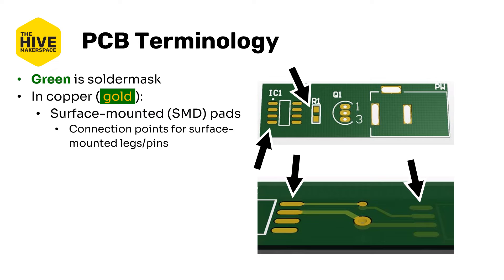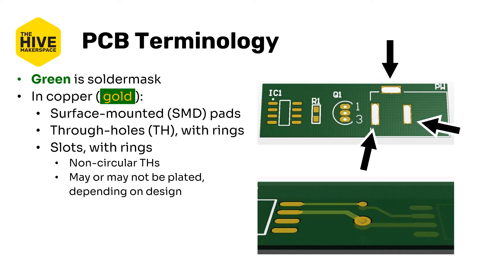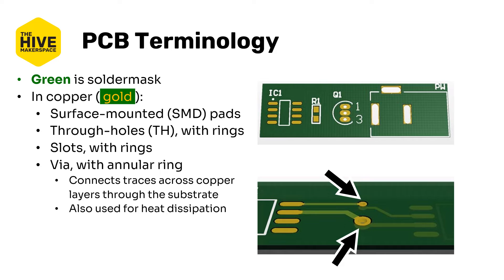Areas of exposed copper metal include surface mounted pads where surface mounted devices connect to, annular rings around any through holes, holes, as well as around slots, and around vias. These rings of copper allow for solder joints to be made between connections and the covered traces. Without them, soldering would be much more challenging.